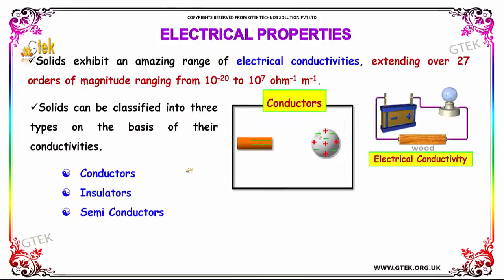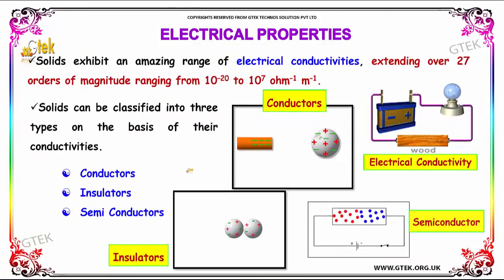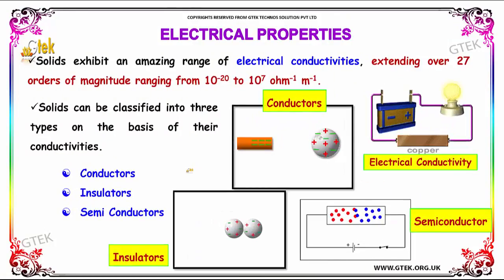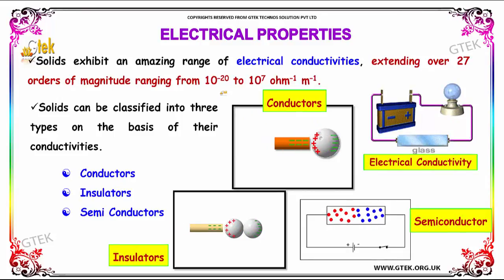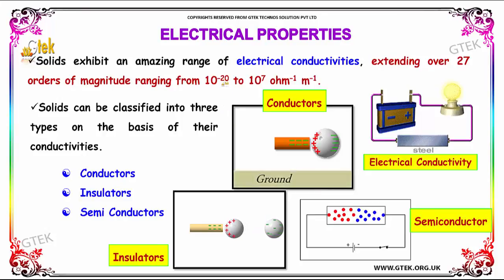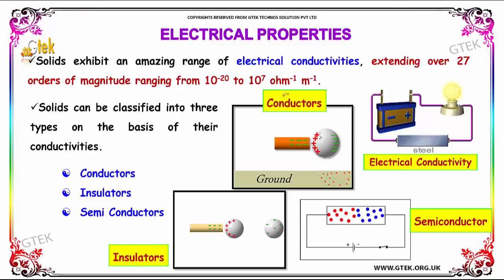Solids exhibit an amazing range of electrical conductivities, extending over 27 orders of magnitude, ranging from 10⁻²⁰ to 10⁷ per ohm per meter.